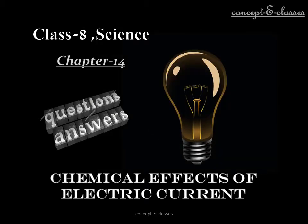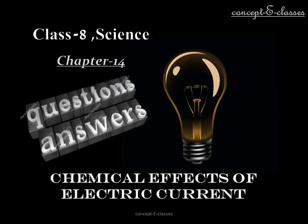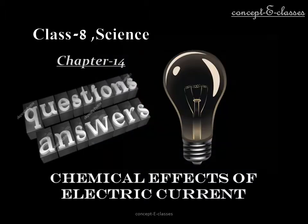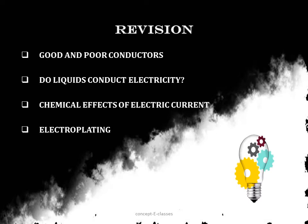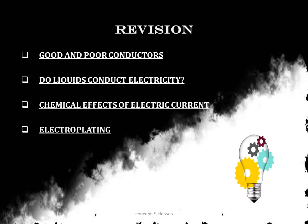This is Concept E Classes, and today we deal with the question and answers of chapter 14: Chemical Effects of Electric Current. Before we enter into the exercises, let's take a quick revision. First, we saw what are good and poor conductors of electricity. Then we saw how liquids conduct electricity using a tester and a magnetic compass needle. Then we saw the different chemical effects of electric current and finally the chemical process of electroplating. Now let's enter into the exercises.